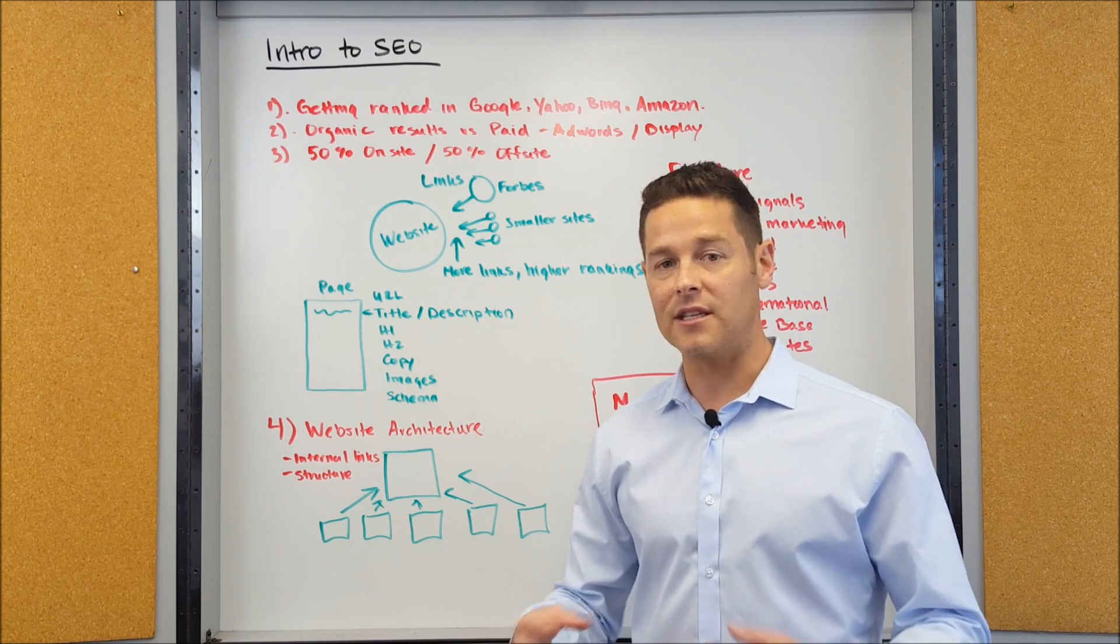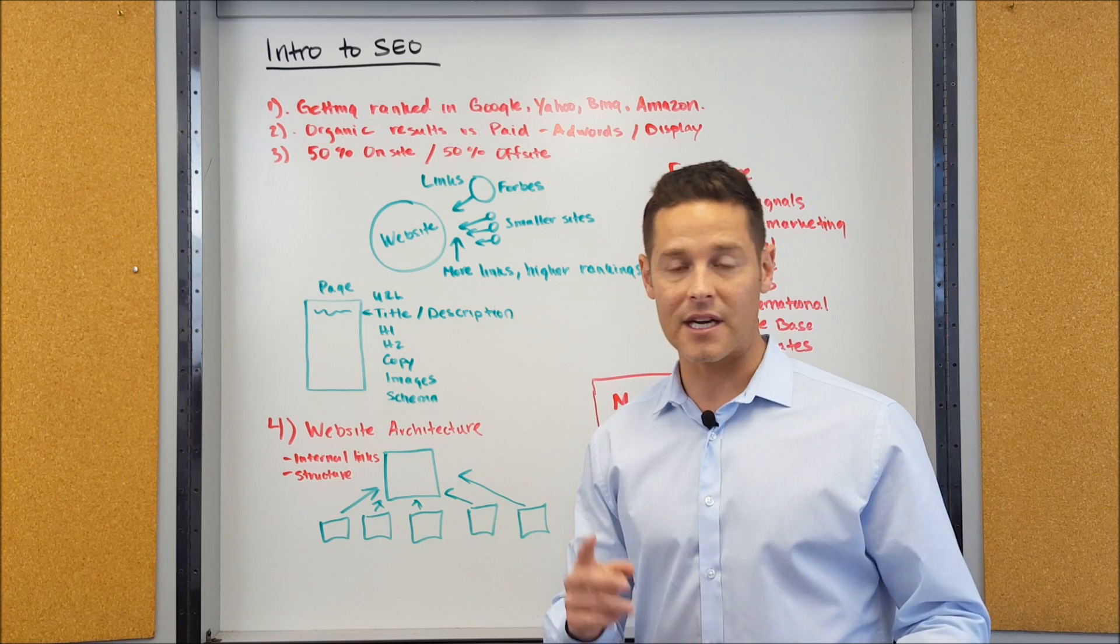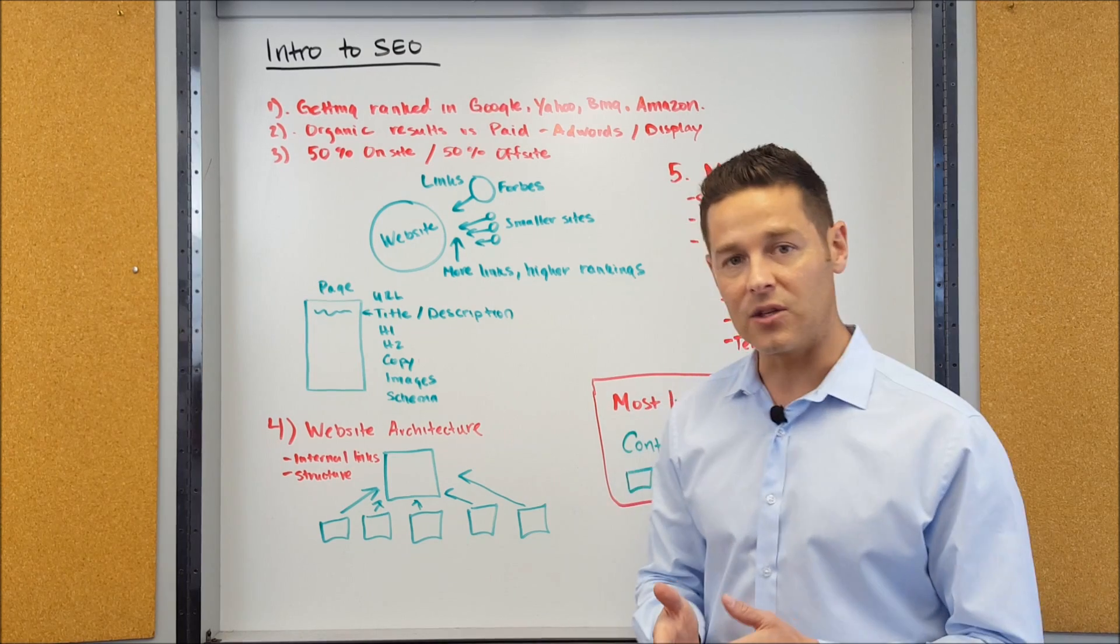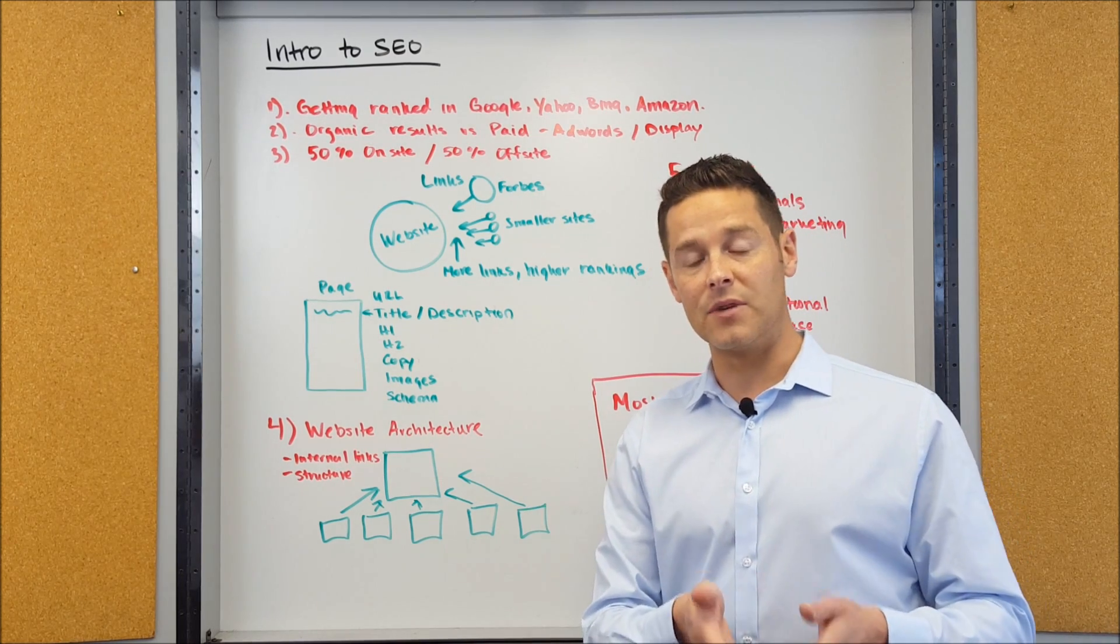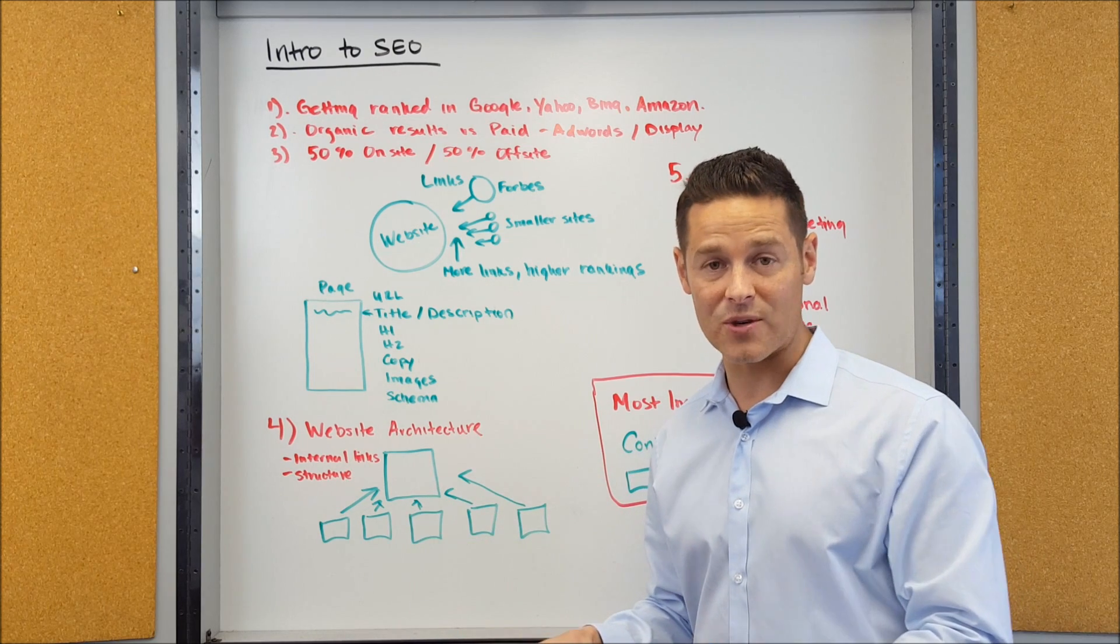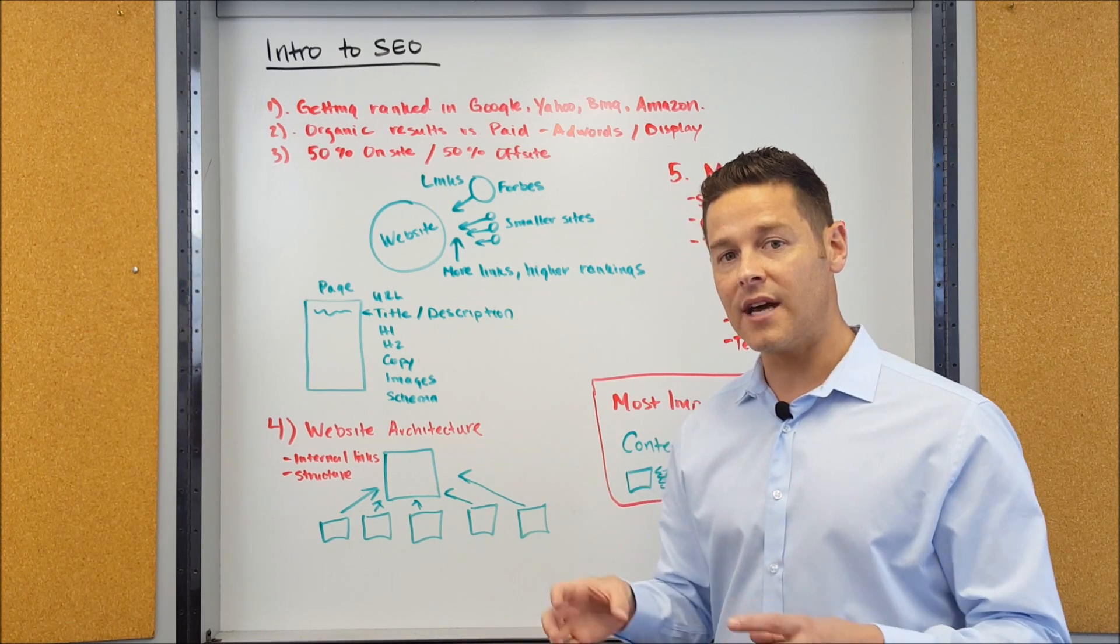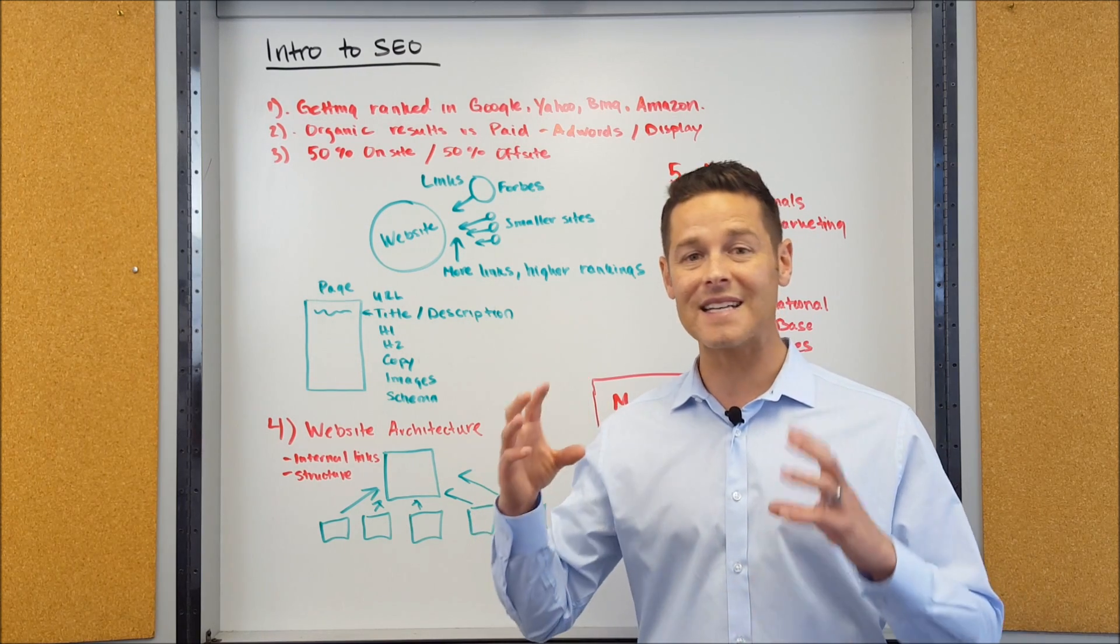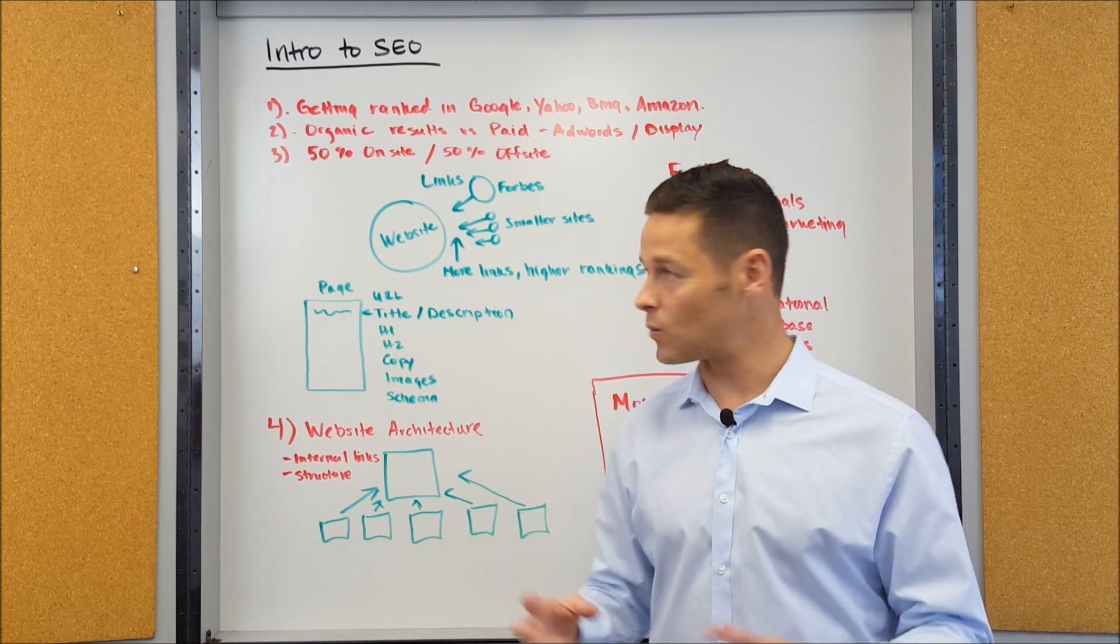A lot of people actually even look at Facebook and Twitter as search engines as well. There's a lot of different ways that you can manipulate the search results so that you can rank higher and get more traffic to your website. But in a nutshell, when most people say SEO, they're trying to get you ranked in Google because that's the biggest search engine in the world.